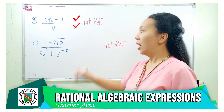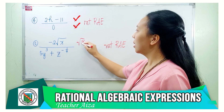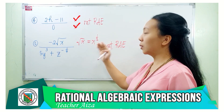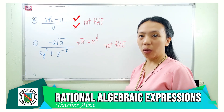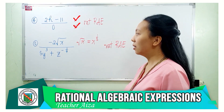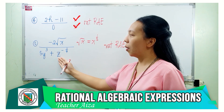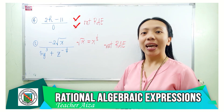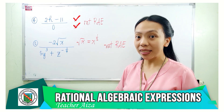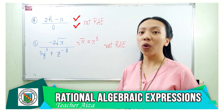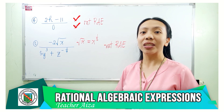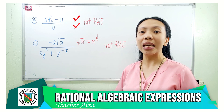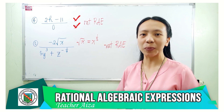But why not? The square root of x is actually equal to x raised to one-half. Thus, the exponent of the variable is not a whole number. Aside from that, the exponent of the variable z in the denominator is also not a whole number. Remember that if at least the numerator or the denominator of an expression is not a polynomial, therefore the expression is not a rational algebraic expression.